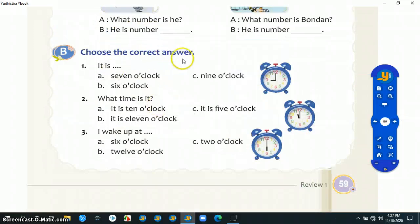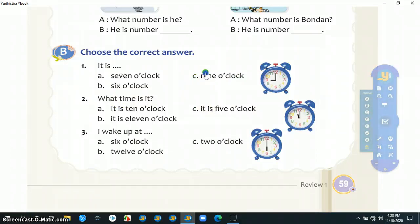Choose the correct answer, artinya pilihlah jawaban yang benar. Kita lihat disini, angka jarum pendeknya di angka 9, berarti it is 9 o'clock. So the answer is C. Number two: what time is it? Kita lihat, it is jam 11, berarti 11 o'clock. Number three: I wake up at, ini kita lihat jamnya jam 6, berarti it is 6 o'clock. I wake up at 6 o'clock.